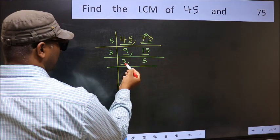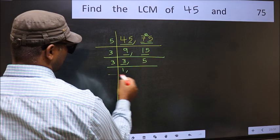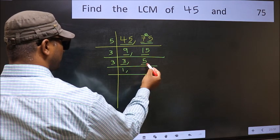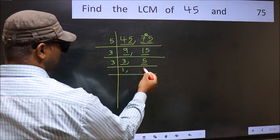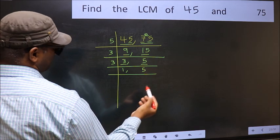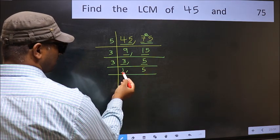Now here we have 3. 3 is a prime number, so 3 times 1 is 3. The other number 5 is not divisible by 3, so you write it down as it is. Now we got 1 here.